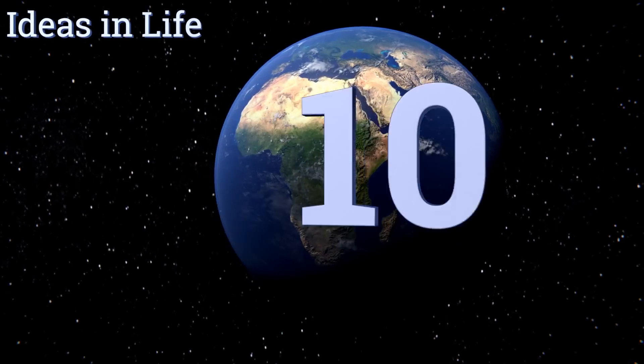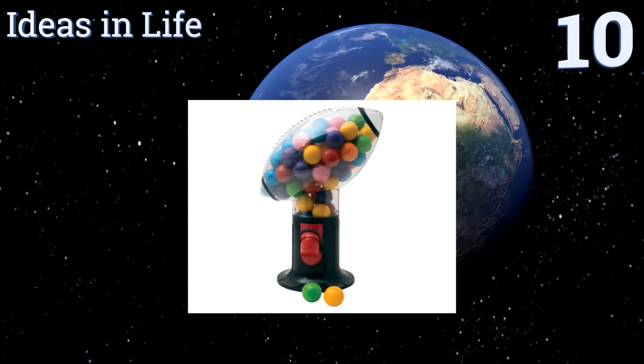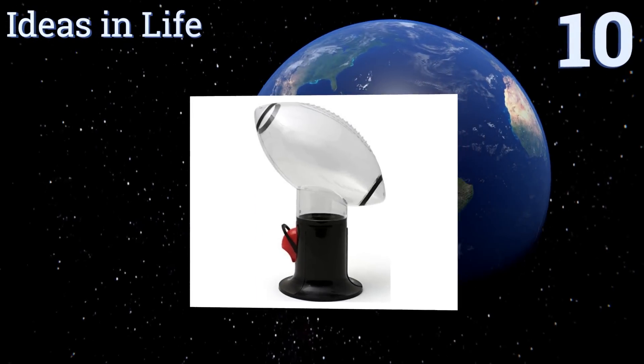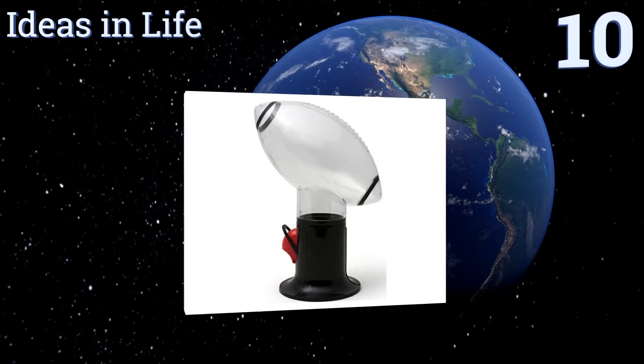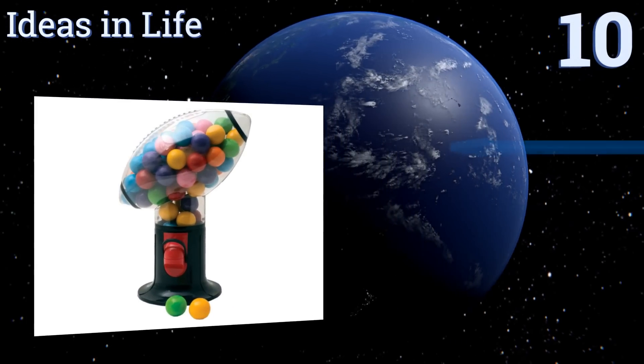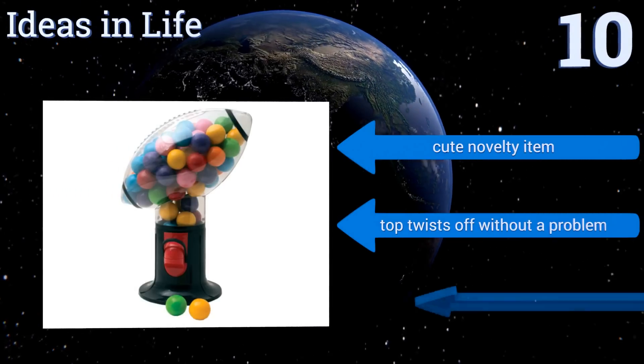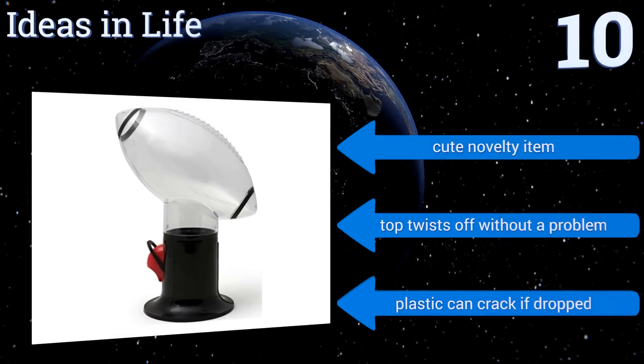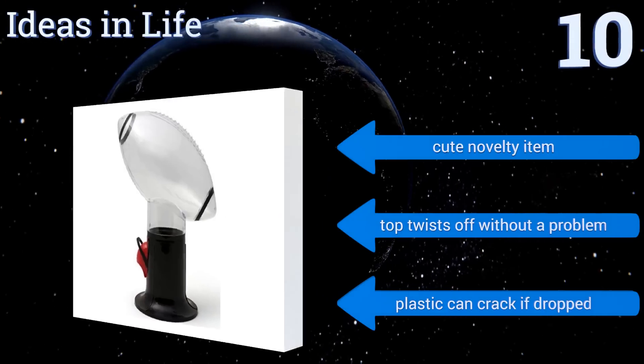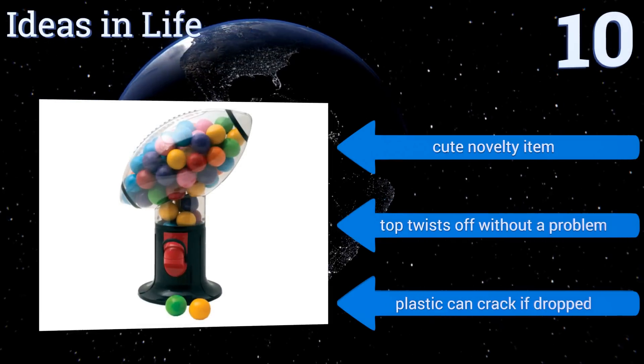Starting off our list at number 10. The Ideas in Life holds candy or nuts in a cool football shape that's perfect for your next Super Bowl party. It dispenses with a simple push of the handle but its small capacity may keep you busy in the refill department. It's a cute novelty item with a top that twists off without a problem. However, the plastic can crack if dropped.